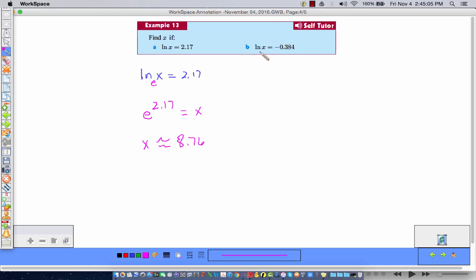And same thing here. Very simple, very easy. This is a base E. So E to the negative 0.384 is going to be equal to x. And again, if you take your calculator and work that out or punch it in, you're going to get x approximately equal to 0.681.